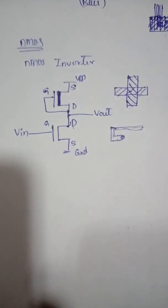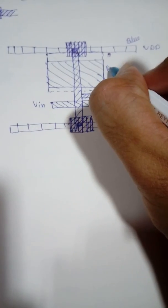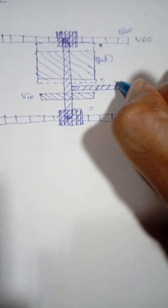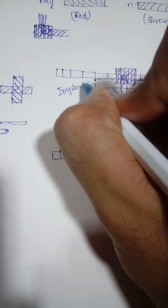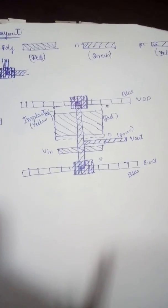To summarize: first draw VDD and ground using metal lines — metal is blue in color, and the representation itself indicates the color. Polysilicon is red in color, N-plus diffusion is green in color, and the implant is yellow in color. These are the color representations used in the layout diagram.